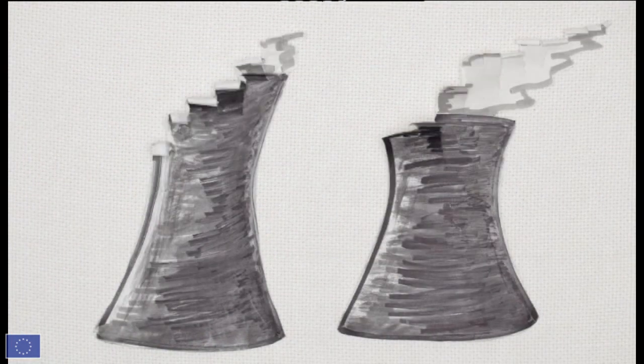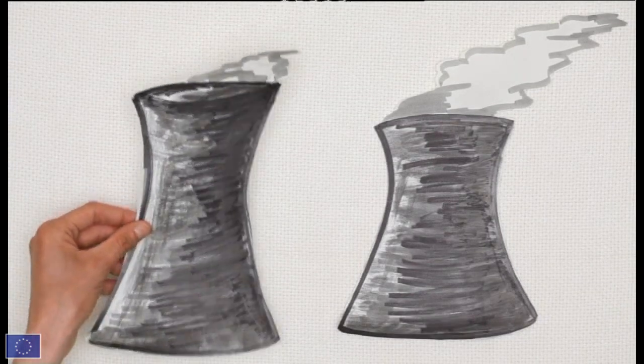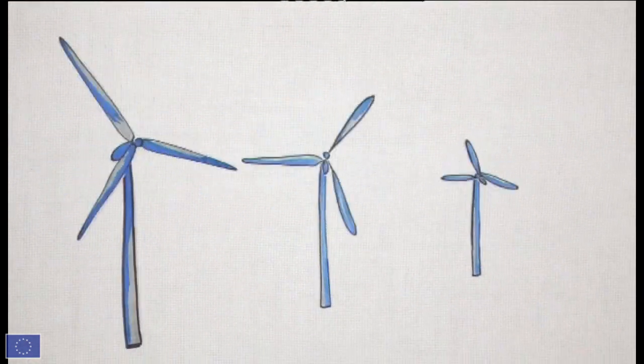Let's follow the path taken by electricity. It starts in a power plant—either thermal, nuclear, or renewable, for example, wind turbines. This is the production part.